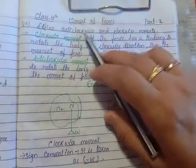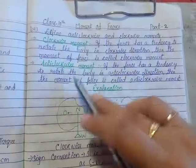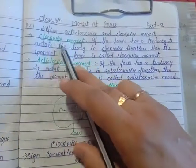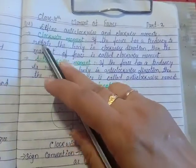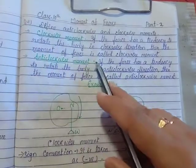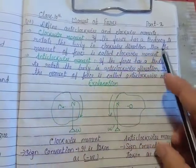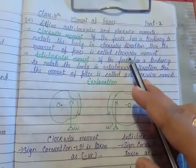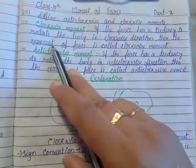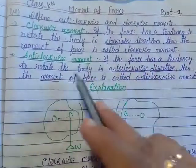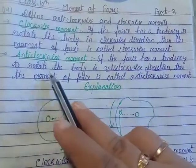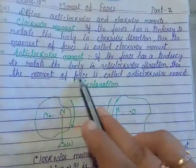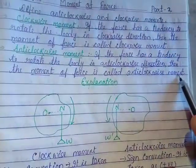What is clockwise moment and anticlockwise moment? According to the name, if the force has a tendency to rotate the body in the clockwise direction, the moment of force is called a clockwise moment. When the force has a tendency to rotate the body in the anticlockwise direction, it is called an anticlockwise moment.